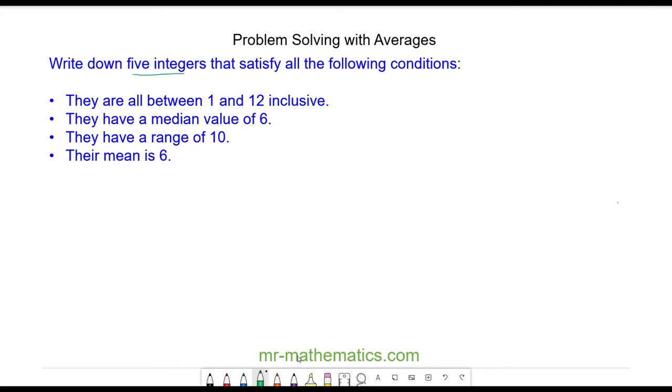In this question we have five integers that satisfy these four conditions. We are told the median value is 6 and they are between 1 and 12 inclusive with a range of 10.